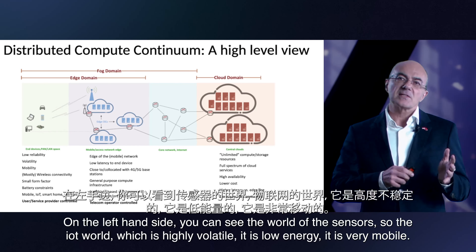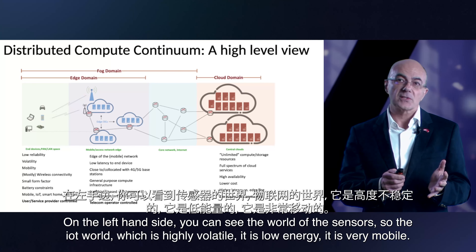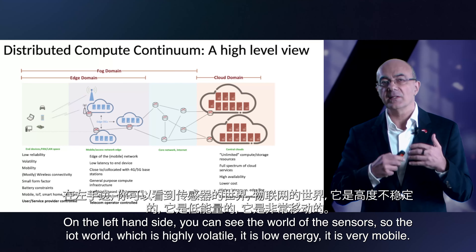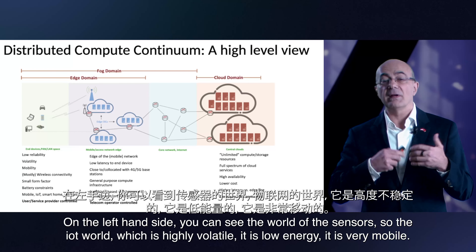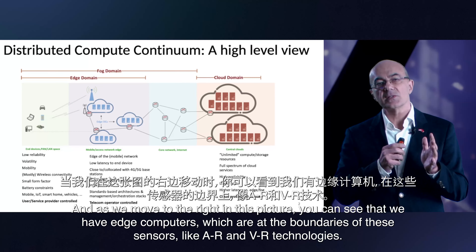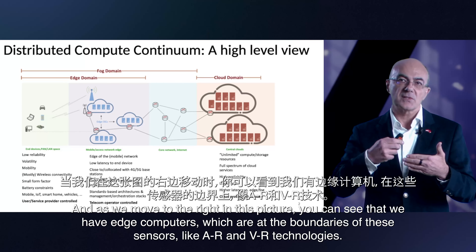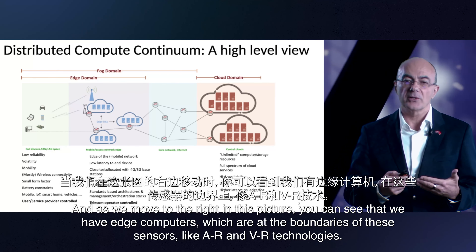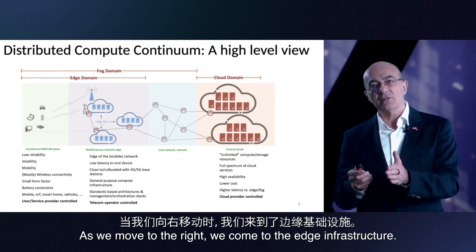On the left-hand side, you can see the world of the sensors — the IoT world — which is highly volatile, low energy, and very mobile. As we move to the right in this picture, we have edge computers at the boundaries of these sensors, like AR and VR technologies. Moving further right, we come to the edge infrastructure.